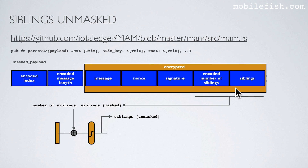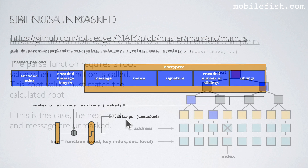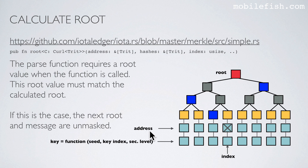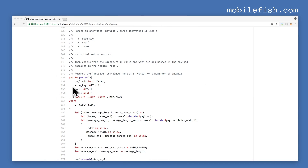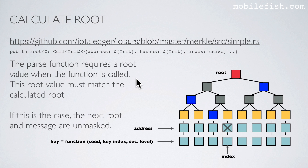The mask number of siblings and the siblings are absorbed and the transformation function is applied. This function outputs the unmasked siblings. Next we need to calculate the root. Previously we calculated the address and we know the index. The index is important because we need to know where the address is located in our Merkle tree. If we hash this address we get this leaf. We know our siblings so we can calculate our root. The root value you pass into the parse function must match this calculated root. If this is the case the signature is valid and the next root and message can be unmasked.